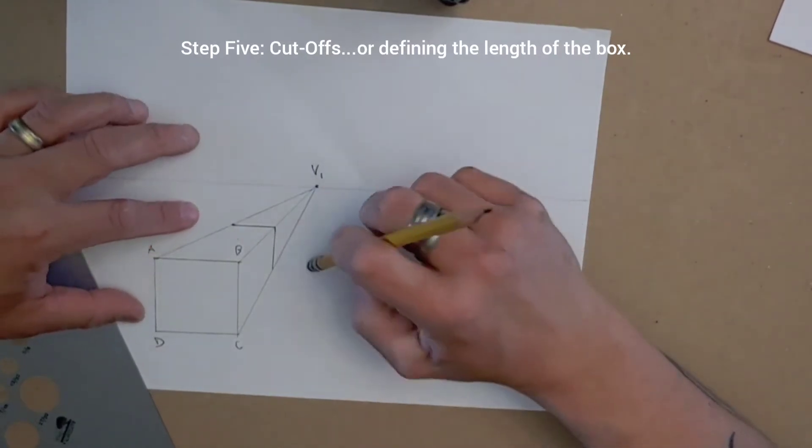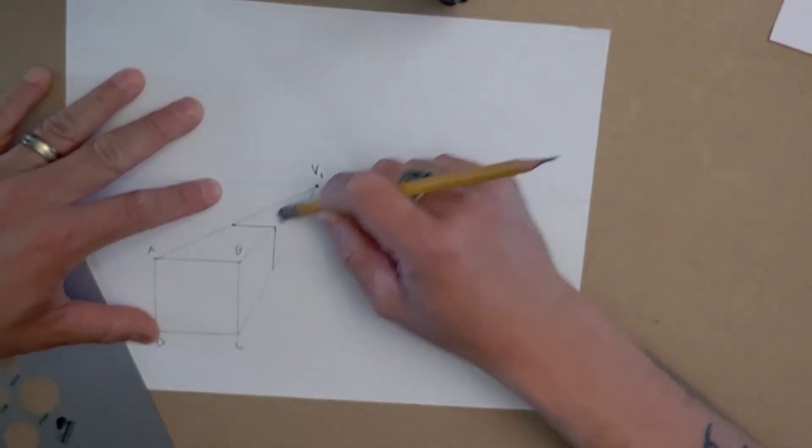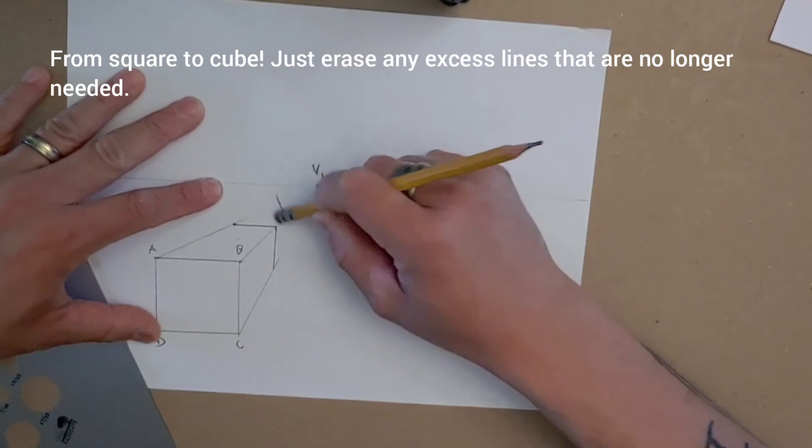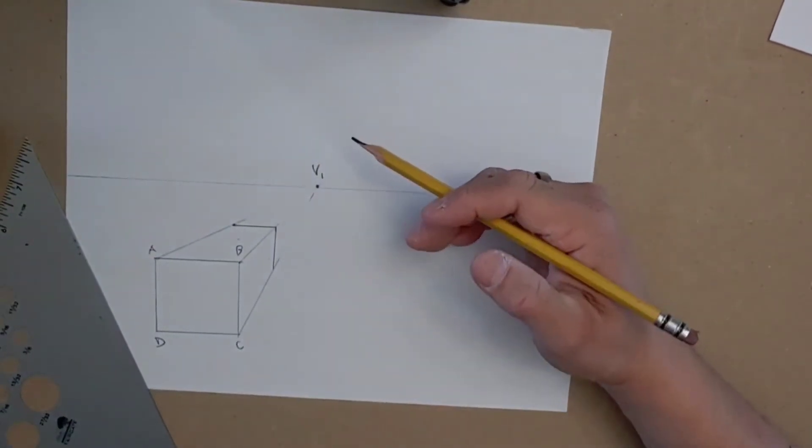These extra lines were helpful at one point, but I no longer need them. So I'll erase those orthogonal lines, and that illusion should be more or less complete.